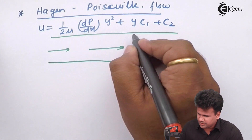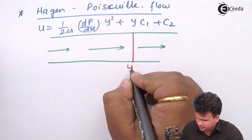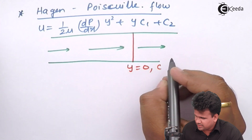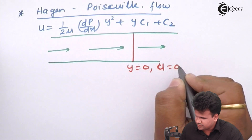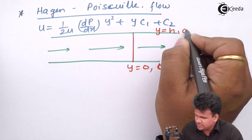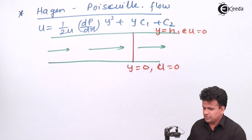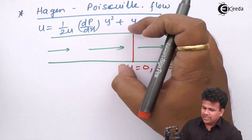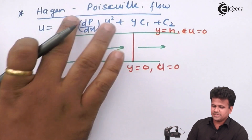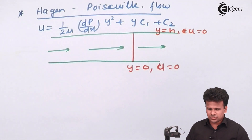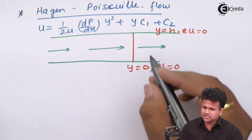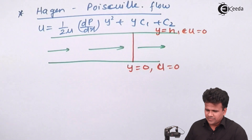The boundary conditions here are: at y = 0, u = 0, and at y = h, u = 0. This means the fluid velocity at the top surface and the bottom surface is zero. Applying these boundary conditions in this equation, we have to solve and find out how the velocity profile looks.